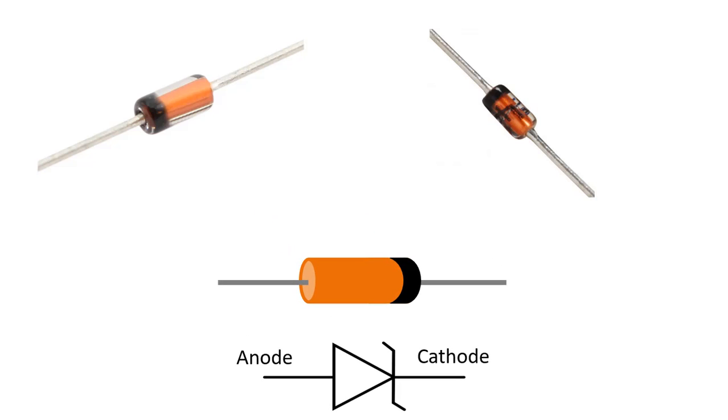When connected to the circuit in the right direction, it works like a normal silicon diode. When it is connected in the opposite direction, it does not conduct until the breakdown voltage, and when the breakdown voltage is exceeded, it conducts current and turns on.